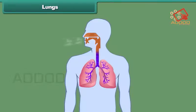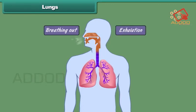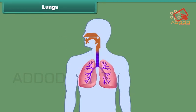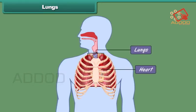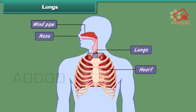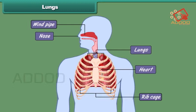Lungs: all living organisms breathe in and breathe out air. Breathing in is known as inhalation; breathing out is known as exhalation. Once inhaled, the air reaches the lungs, where it is exchanged for impure air which is then exhaled. The human body has two lungs located on either side of the heart in the chest cavity. The nose and the windpipe form the passage for air to move in and out of the lungs. Like the heart, the ribcage also protects the lungs.